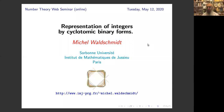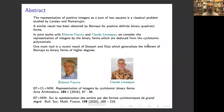I thank the organizers for this great idea of organizing this web seminar and also for the great idea of inviting me. I am going to speak on the representation of integers by cyclotomic binary forms. I will start with the representation of integers as sum of two squares — a classical problem — and there is a constant of Landau and Ramanujan which comes there. It has been generalized by Bernays for positive definite binary quadratic forms. What I am going to explain is some joint work with Etienne Fouvry and Claude Lévesque, where we consider the representation of integers by the binary forms deduced from the cyclotomic polynomials.